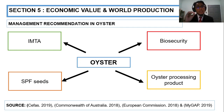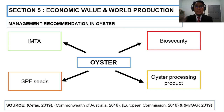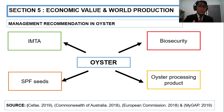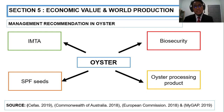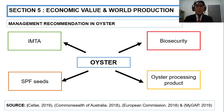Second, we must have SPF seed — Specific Pathogen Free — free from certain pathogens such as vibriosis. Third, and for me this is the most important: because oyster is farmed in an open aquaculture system, we must focus on biosecurity — from site selection to seed and human management. Lastly, for value-added products, we can have oyster processing products such as oyster sauce, or perhaps oyster snacks, chips, or other oyster-based products to increase the value.